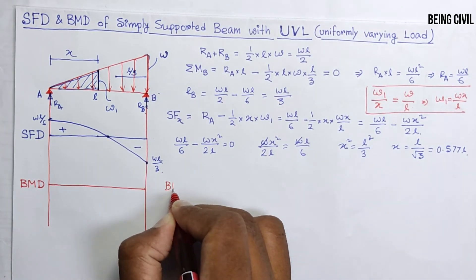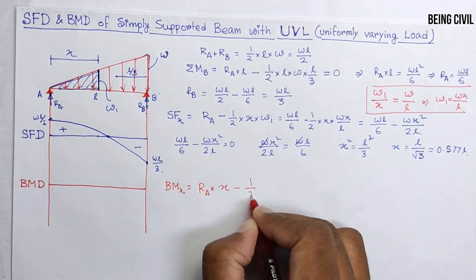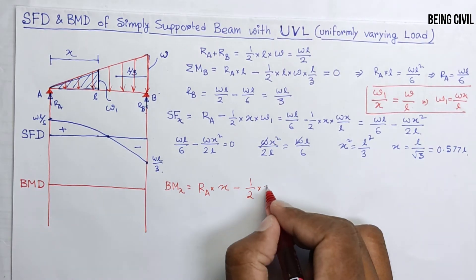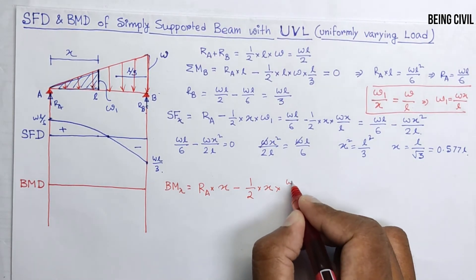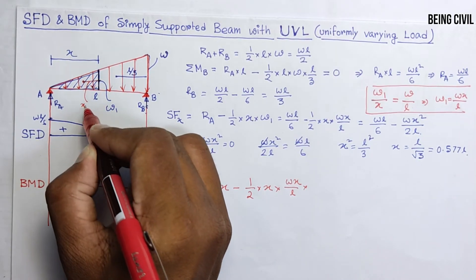Bending moment at a distance of X equals RA into X minus area of this triangle, half into base is X, height WX by L, and the CG distance which will be somewhere here, X by 3. So this is WL by 6 times X minus 1/6 times WX cubed over L.